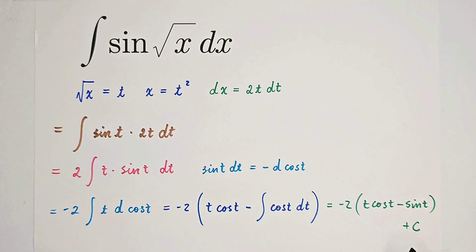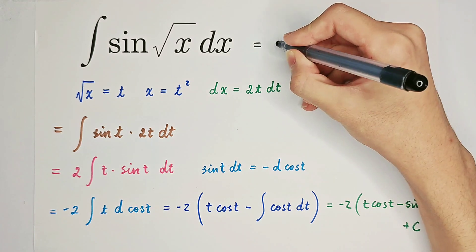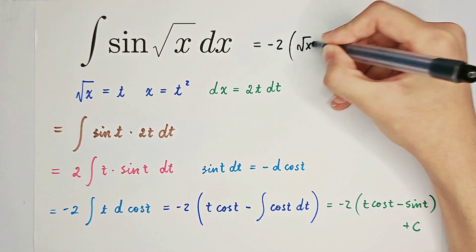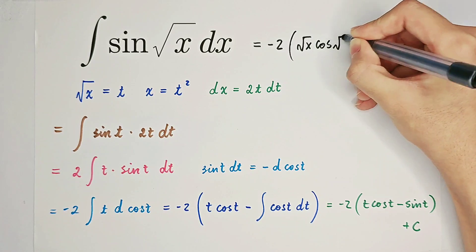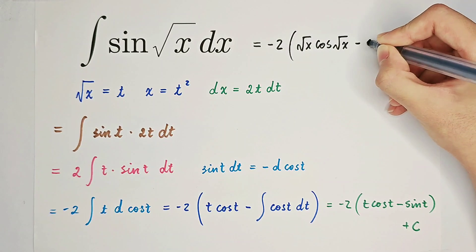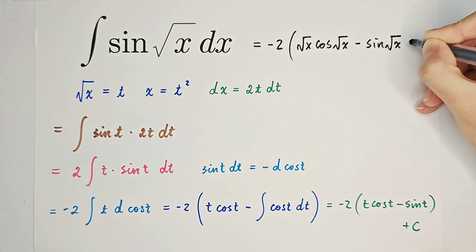t is square root of x. Then the answer will be negative 2 times square root of x cosine of square root of x minus sine of square root of x, plus c.